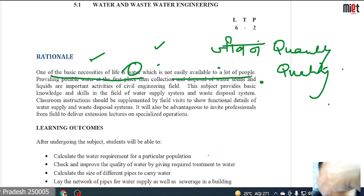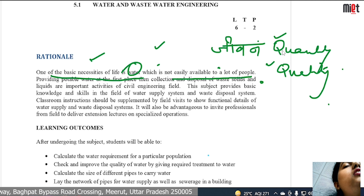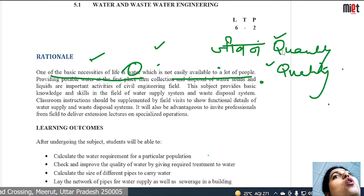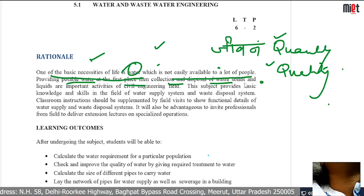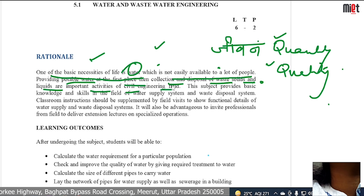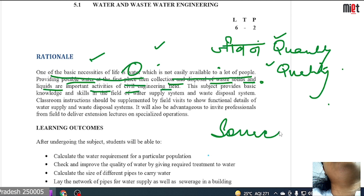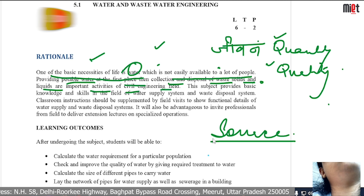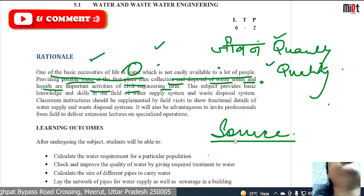As an engineer, we can develop a system so that whatever water is needed for a person — in the required quantity and quality — we can fulfill it. Providing potable water, and the collection and disposal of waste solids and liquids, are important activities of the civil engineering field.